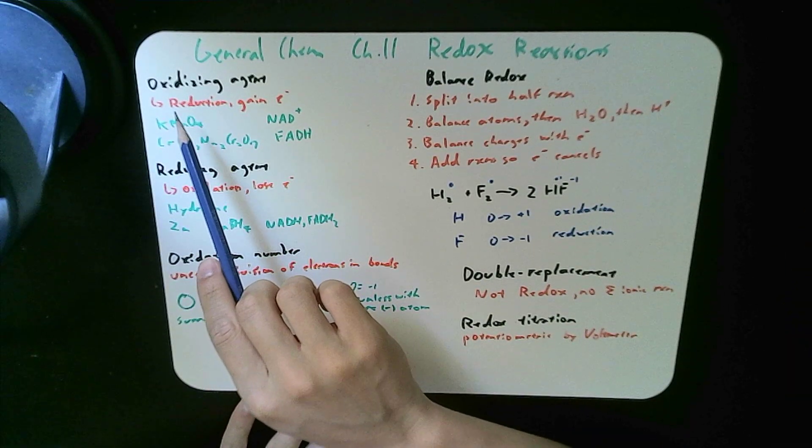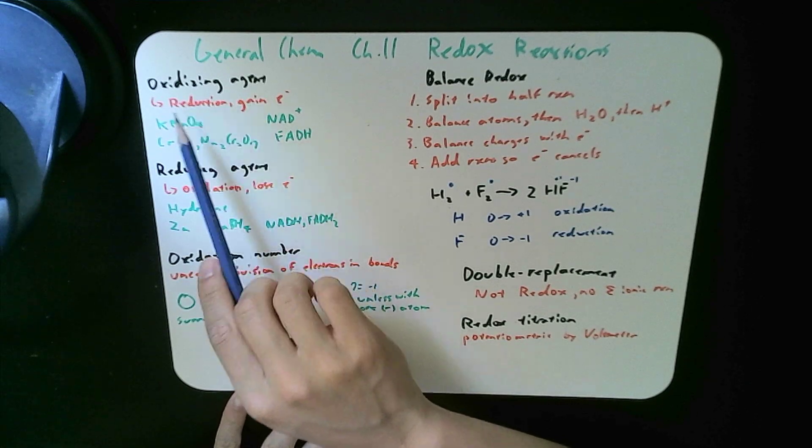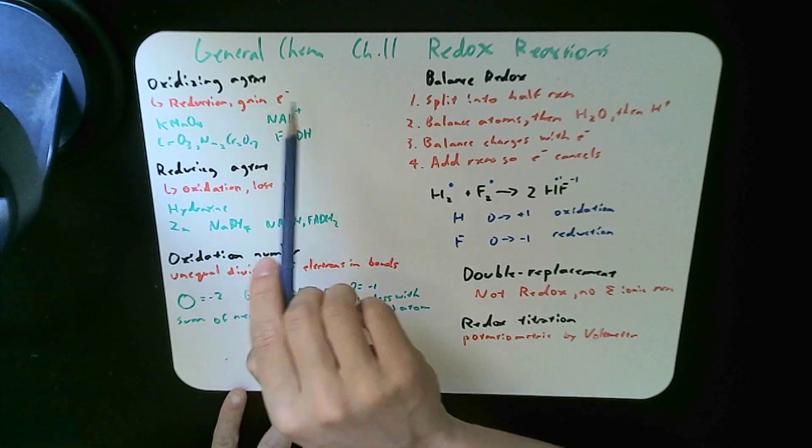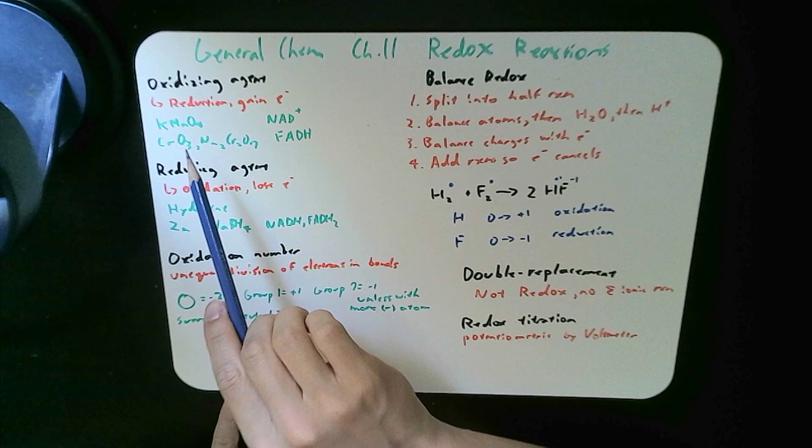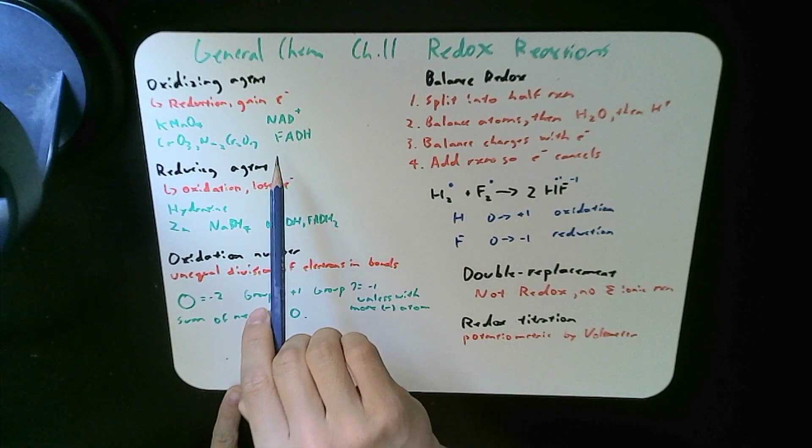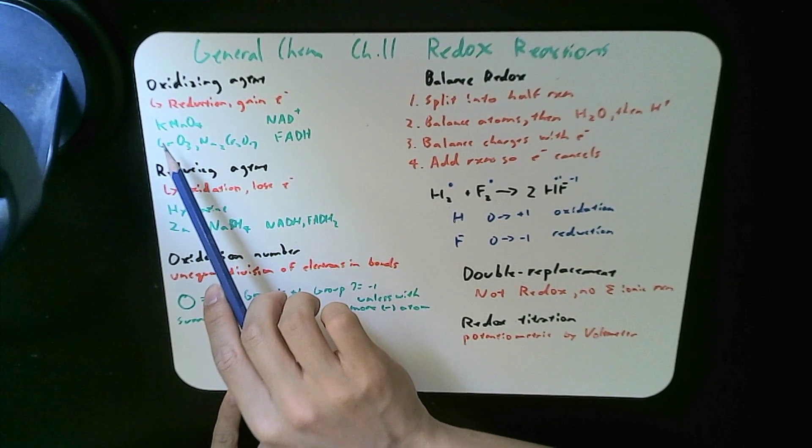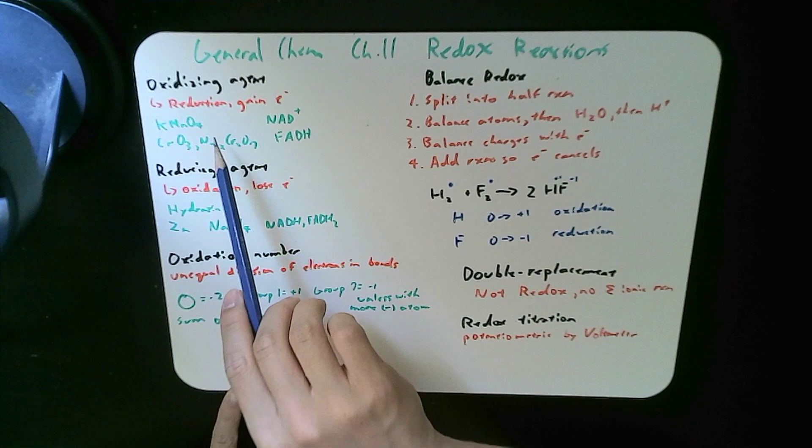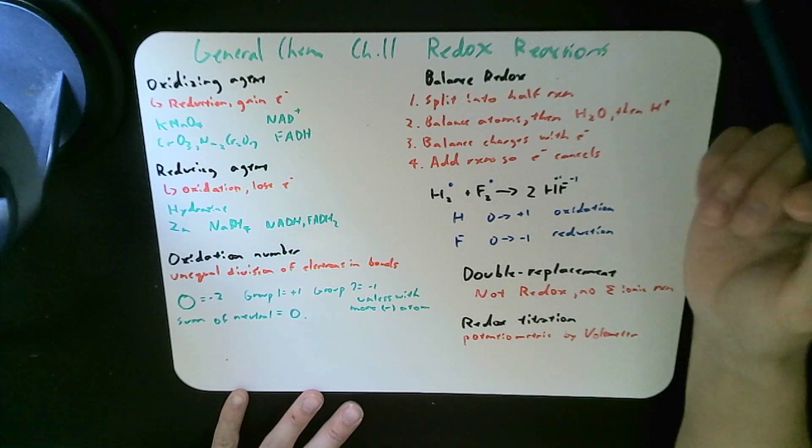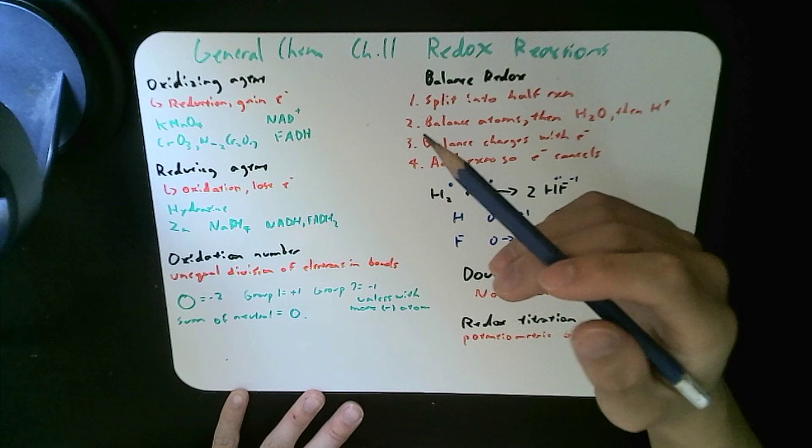Oxidizing agent is one that undergoes reduction and gaining electrons. They can be seen such as NAD+, FADH, KMnO4, all these oxidizing agents, which cause another electron to gain more bonds to oxidize.